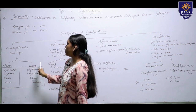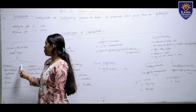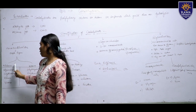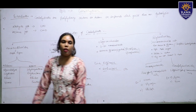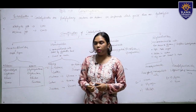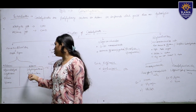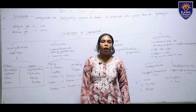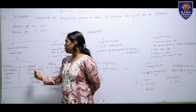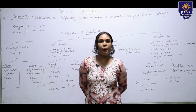Examples of aldoses include glyceraldehyde, and examples of ketoses include dihydroxyacetone. Glyceraldehyde has a three-carbon chain and is also known as a triose. Erythrose is an aldose with a four-carbon chain, and the corresponding ketose is erythrulose. Ribose is a pentose with a five-carbon chain.